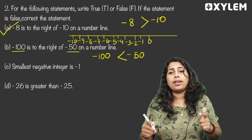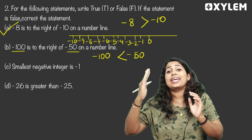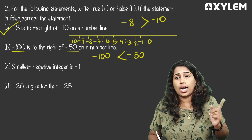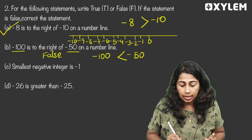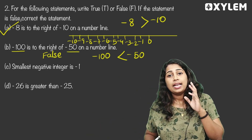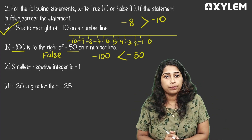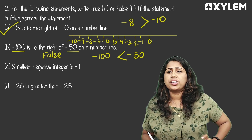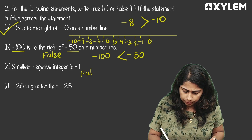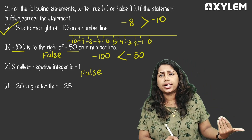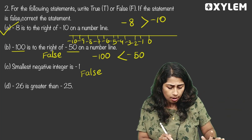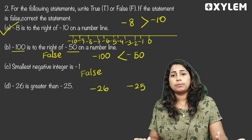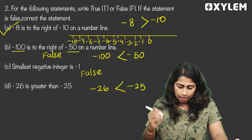Next statement: negative 100 is to the right of negative 50 — this is a FALSE statement. The correction is: negative 50 is to the right of negative 100. Next: the smallest negative integer is negative 1 — that is a FALSE statement. Next: negative 26 is greater than negative 25 — that is also a FALSE statement.